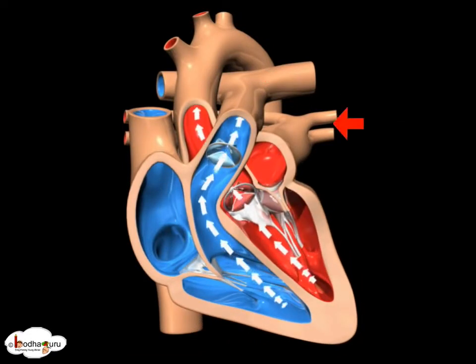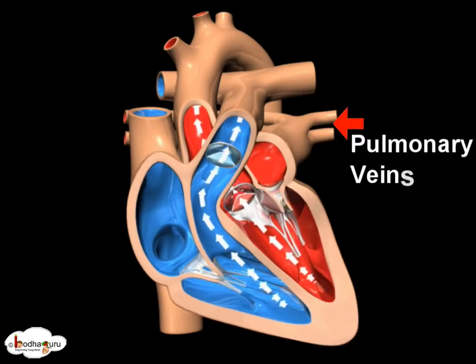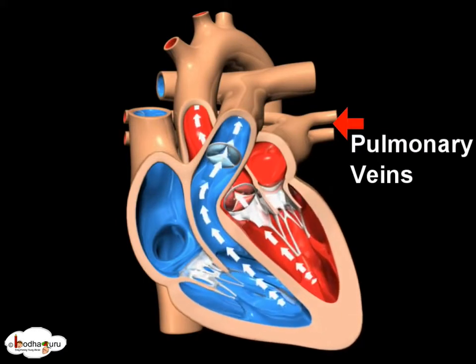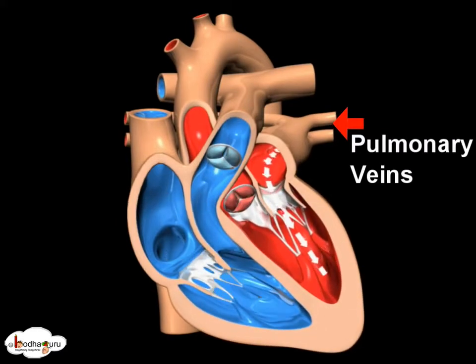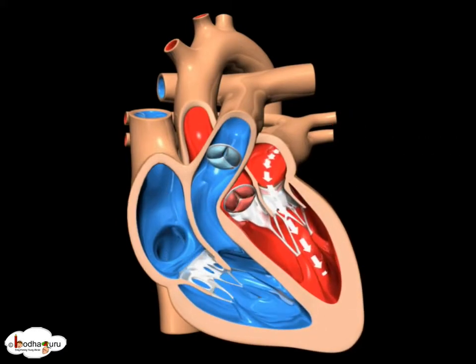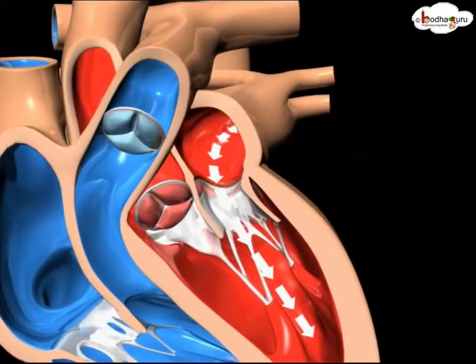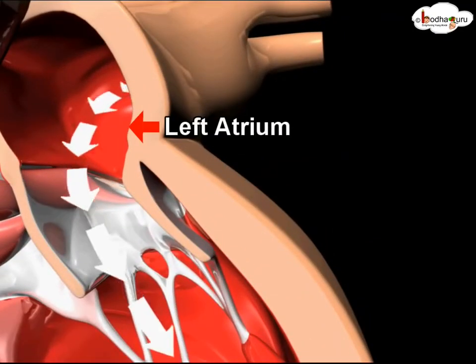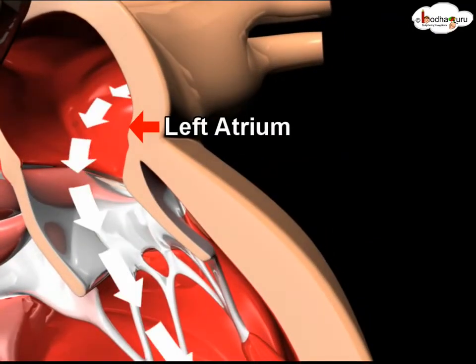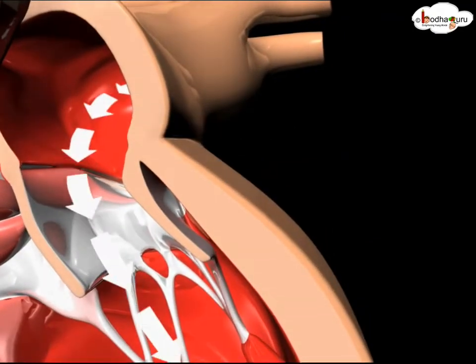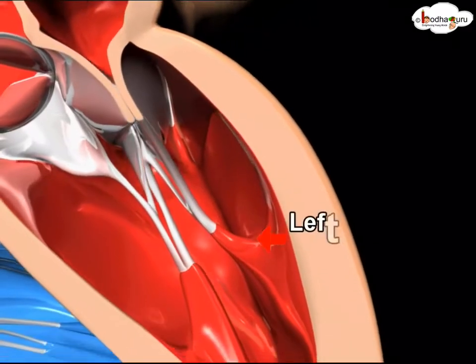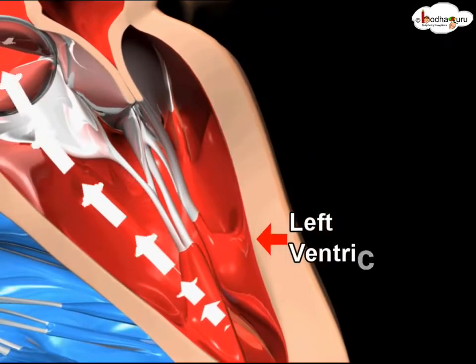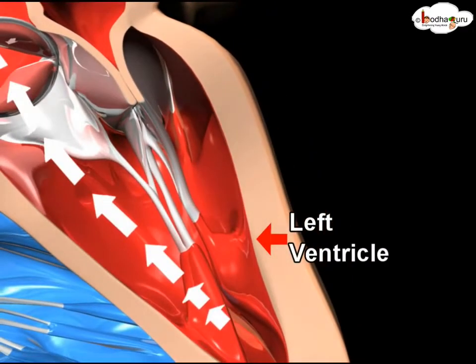After oxygenation, blood travels through the pulmonary vein and is received in the upper left chamber, that is the left atrium, which pumps it into the left ventricle below.